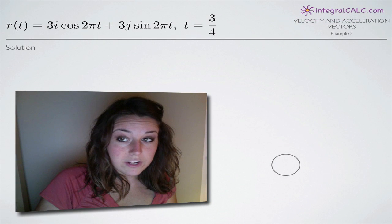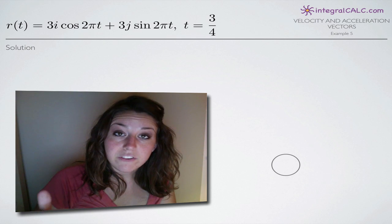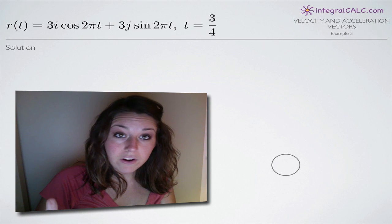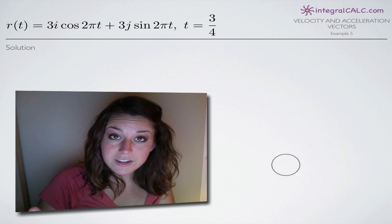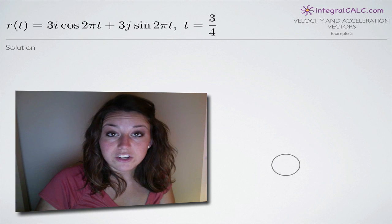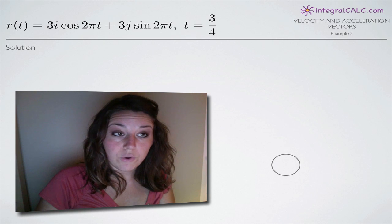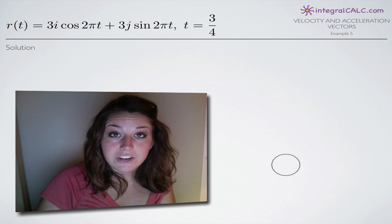The first thing we're going to do — we don't actually need any specific formulas for this problem. Remember that the velocity vector is found by taking the first derivative of r of t, so we're looking for r prime of t. And the acceleration vector is the second derivative of r of t, so we'll be finding r double prime of t.